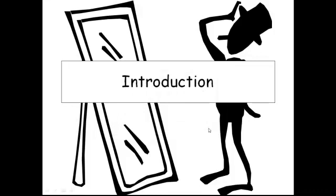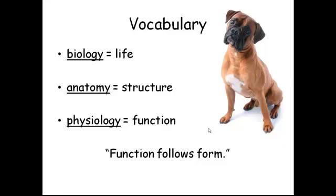Let's start talking about anatomy and physiology. Anatomy and physiology is under the general category of biology. 'Bio' refers to life or living things, so biology is the study of life. Anatomy basically refers to the structure or the form — the pieces and parts of something. And physiology refers to the function — how those pieces and parts work, what do they do?